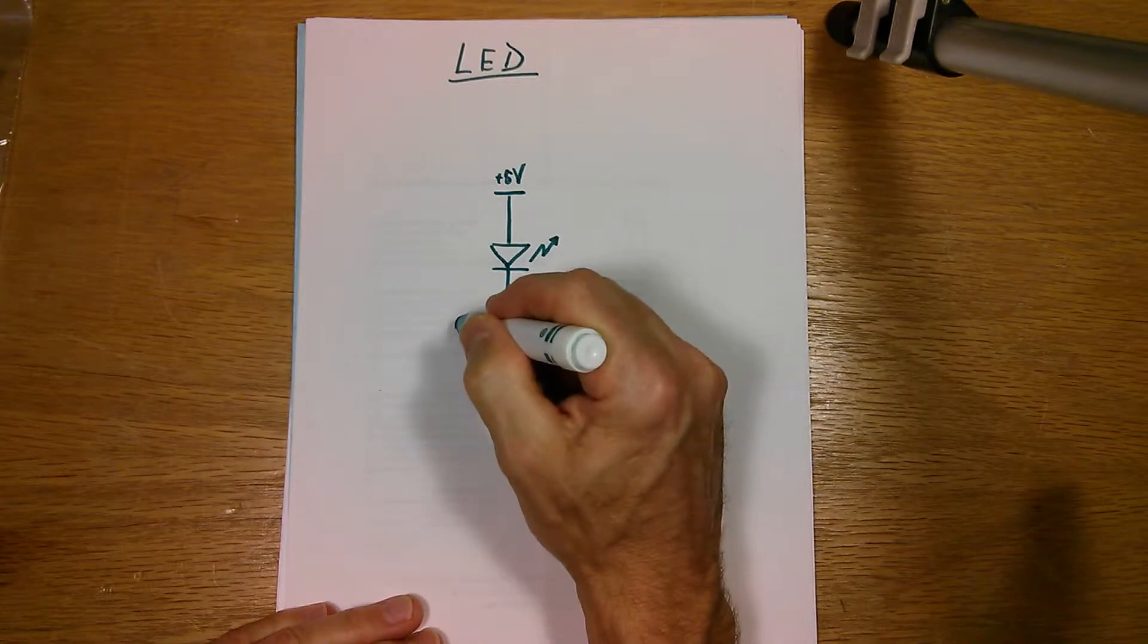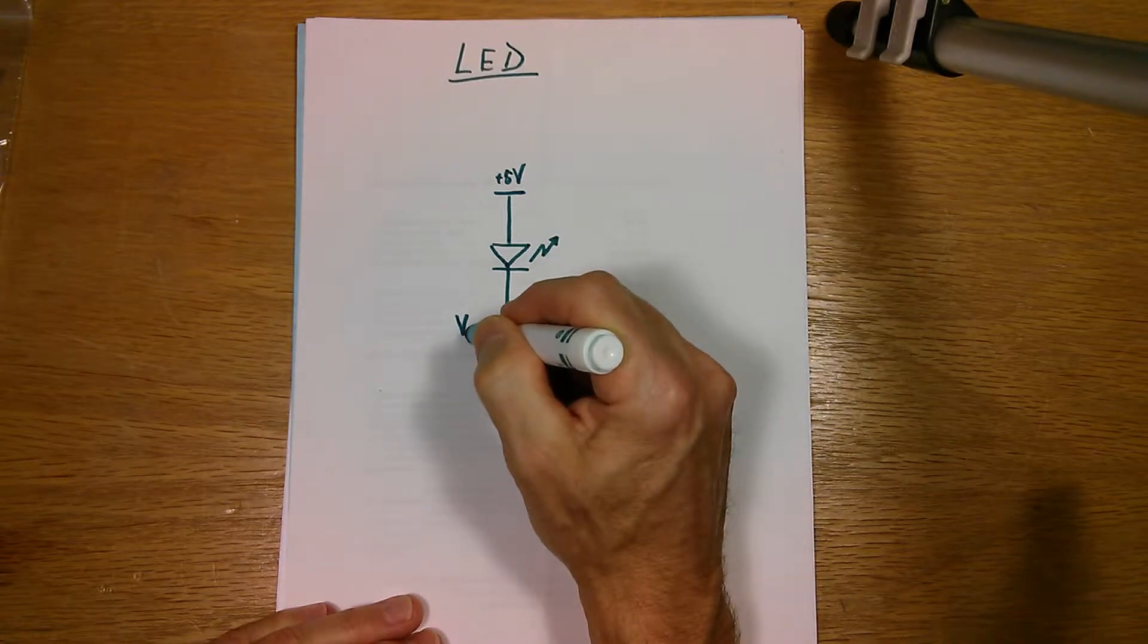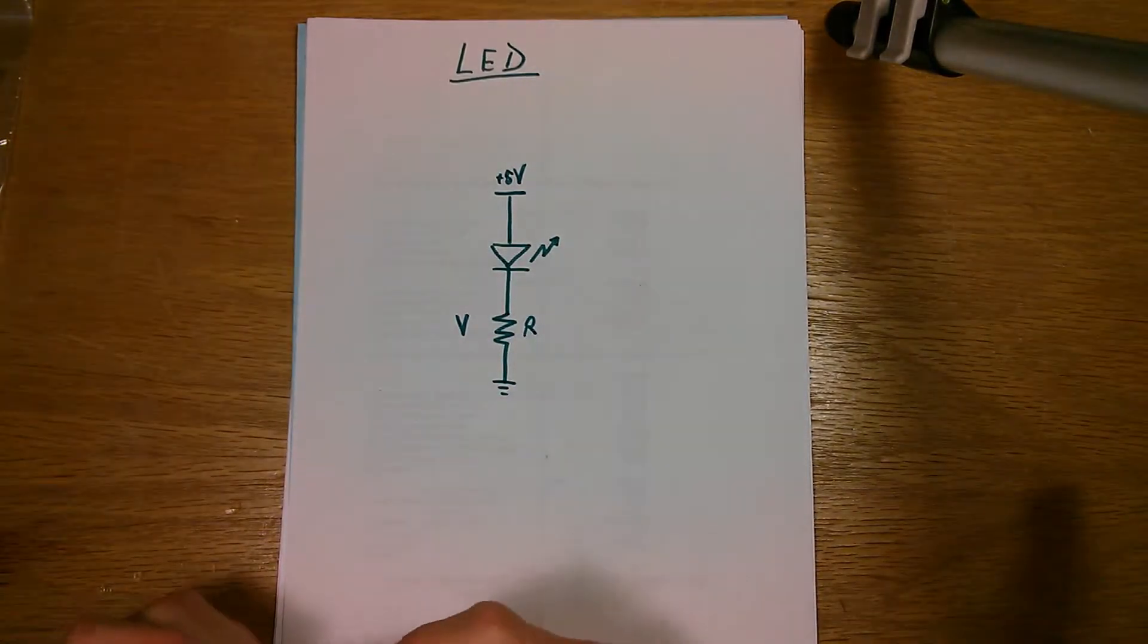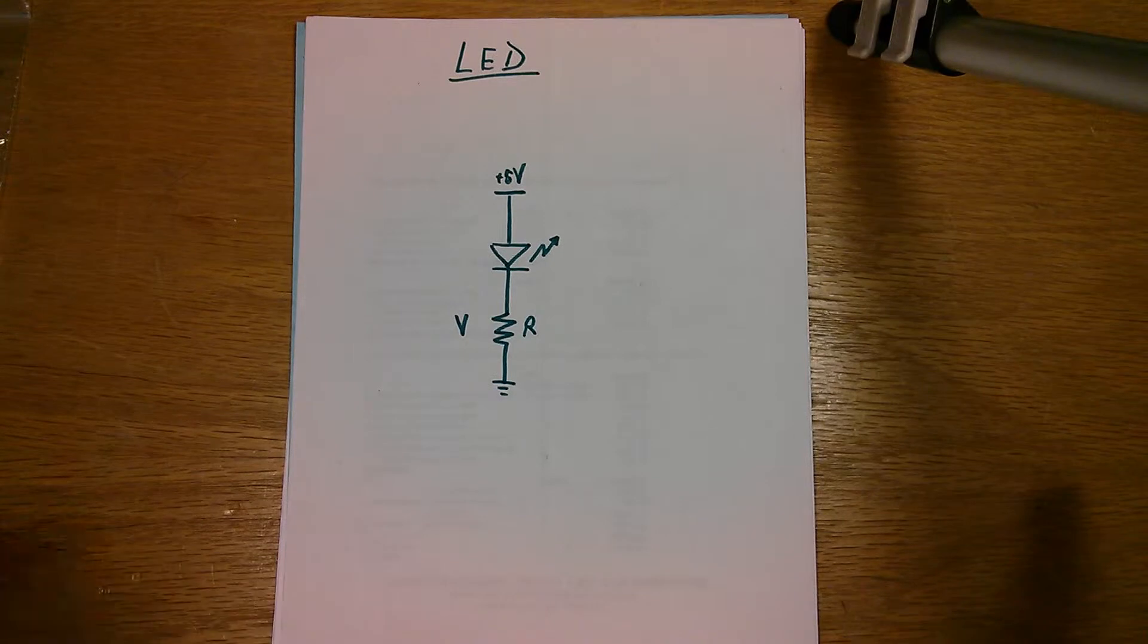But I want to figure out what value of resistance here to keep the voltage or the current flowing through the LED to a maximum of 10 milliamps or something like that.